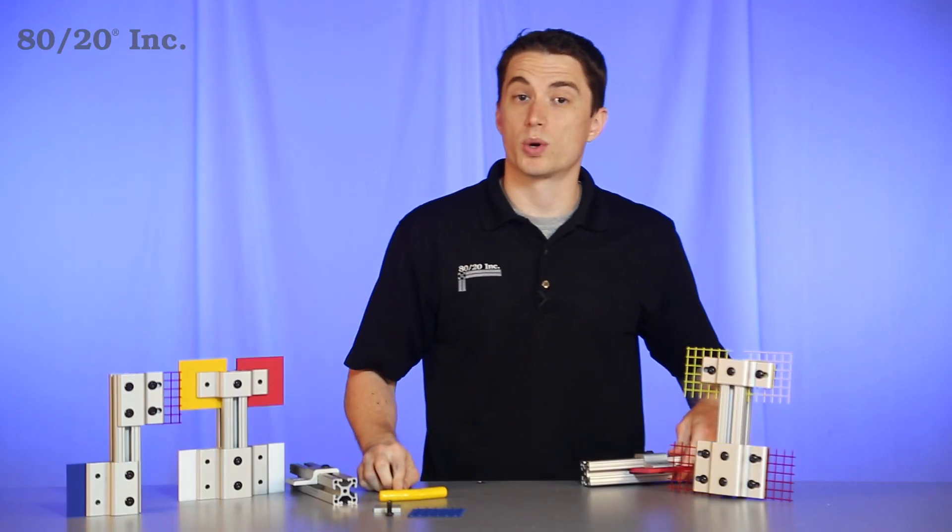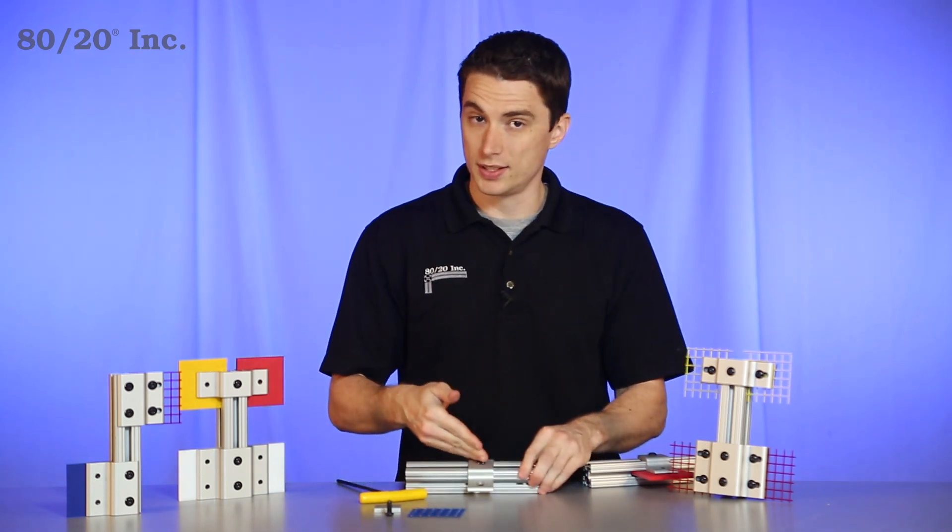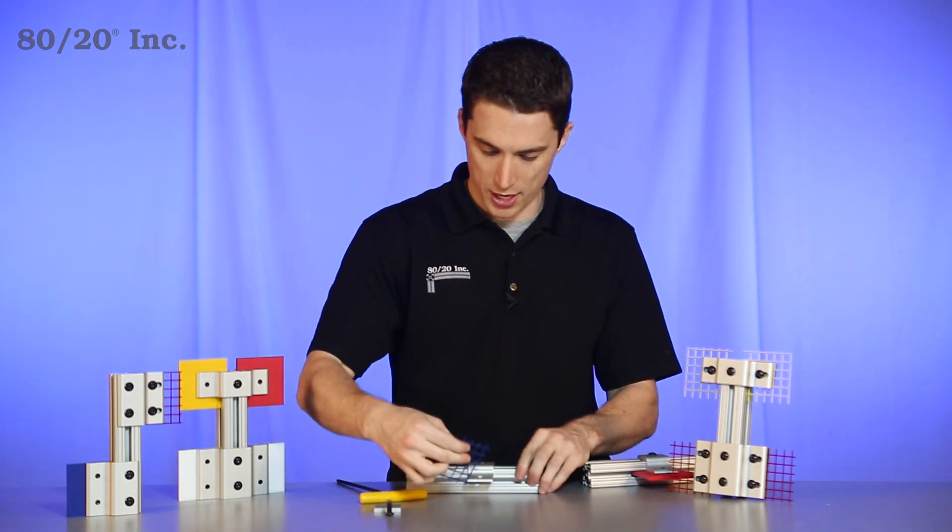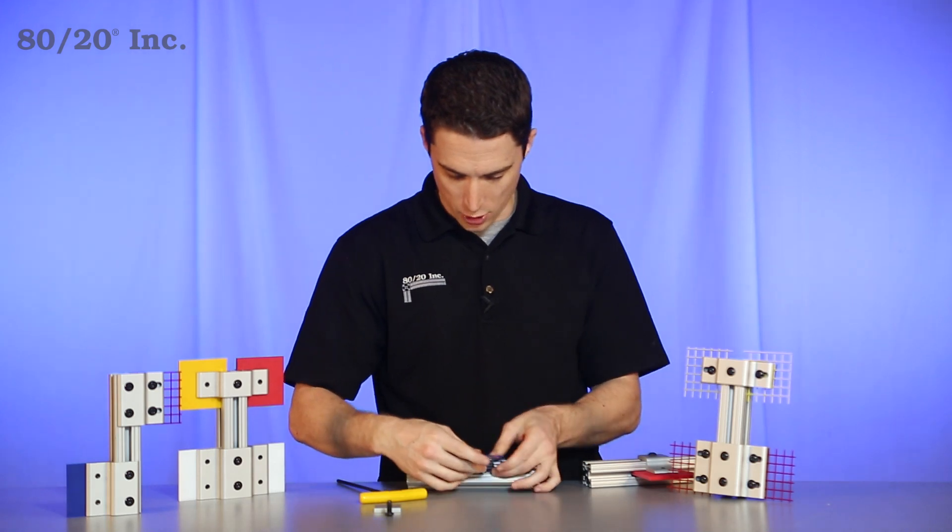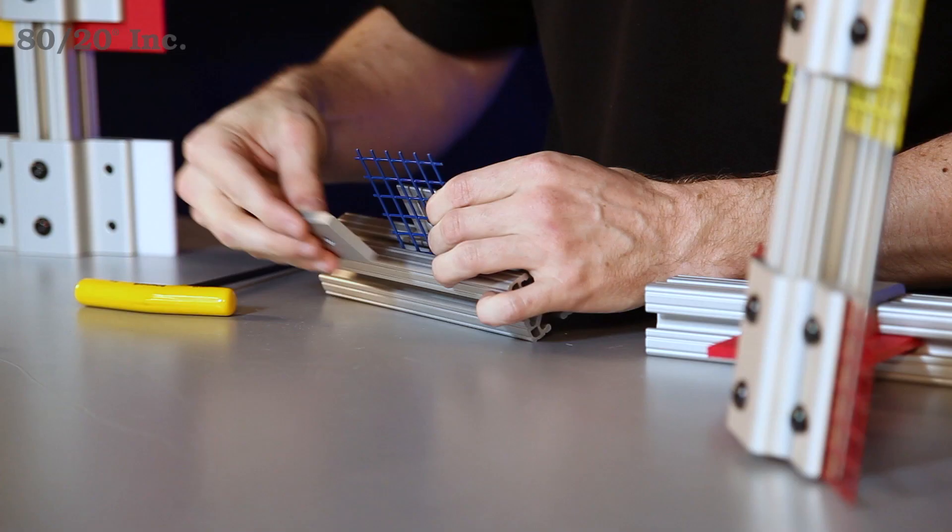Now mesh retainers work basically the same with one small difference. You have your retainer locked into place. Take your mesh, slide it into the open T-slot. This time you'll take a backing plate and put it on the other side of the mesh.